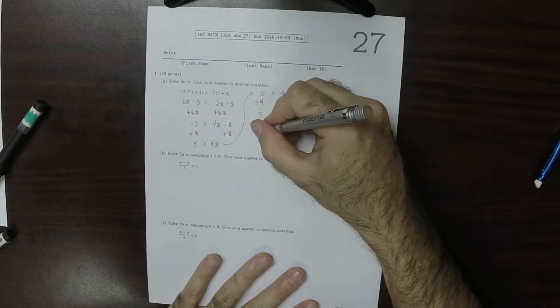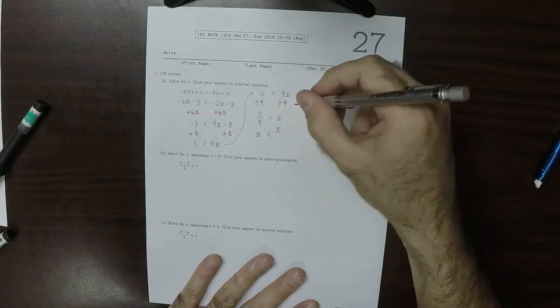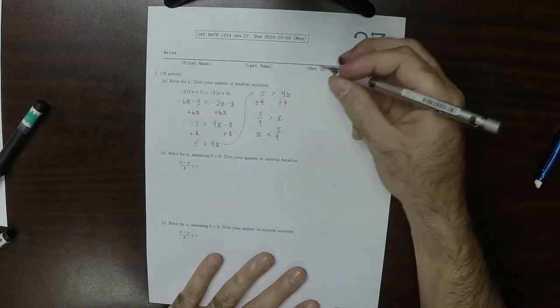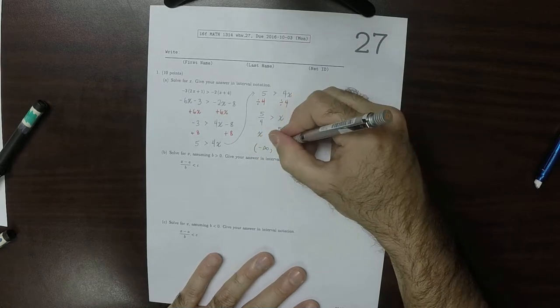Or, if you like, turning the inequality around, x less than 5 over 4, so that would be negative infinity to 5 over 4.